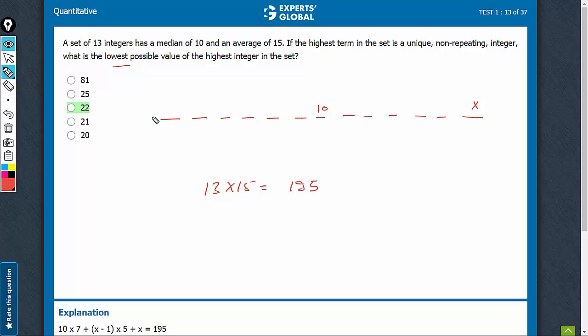So everything else should be maximized. So these terms can be x minus 1 each. Remember, repetition is alright, because it said that only this number is unique; others may repeat x minus 1. And all of these terms need not be less than 10, they can as well be equal to 10.